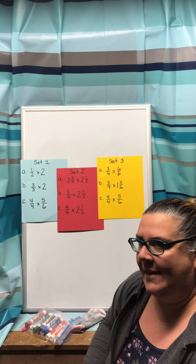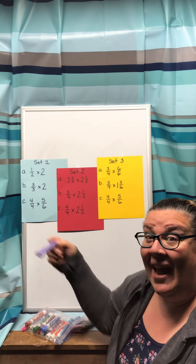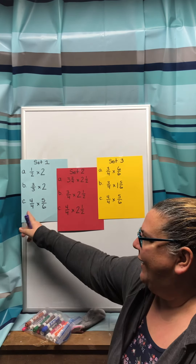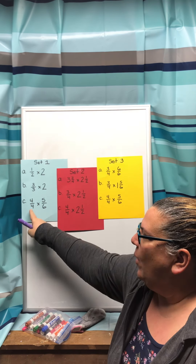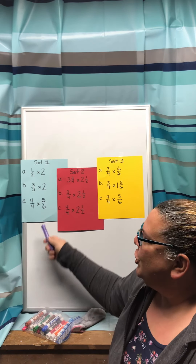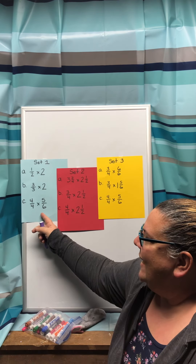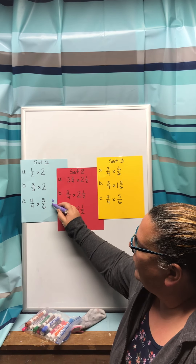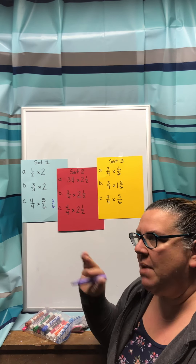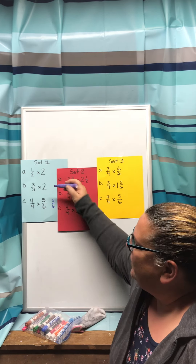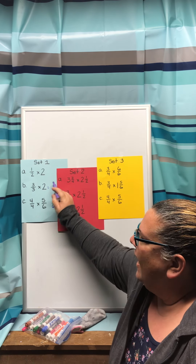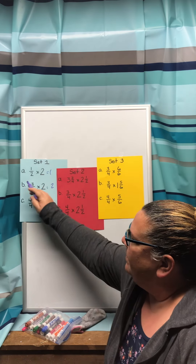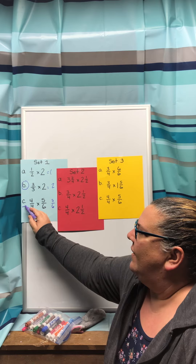Then I go down and look at C in set one. C is four-fourths times five-sixths — another way of saying one times five-sixths. We learned that anytime I multiply with one, I'm going to end up with the same number. So one times five-sixths gives me five-sixths. So A and B both give me whole numbers, while C gives me a fraction — five-sixths. My greatest product is going to be B, so I'll circle B. And the smallest product in set one is going to be C.